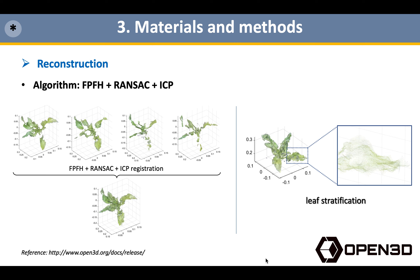For lettuce with smaller shapes in the early stage of growth, we cropped and combined leaf instances in multiple single viewpoint clouds to replace reconstruction. However, the leaf stratification problem will be solved in future work.